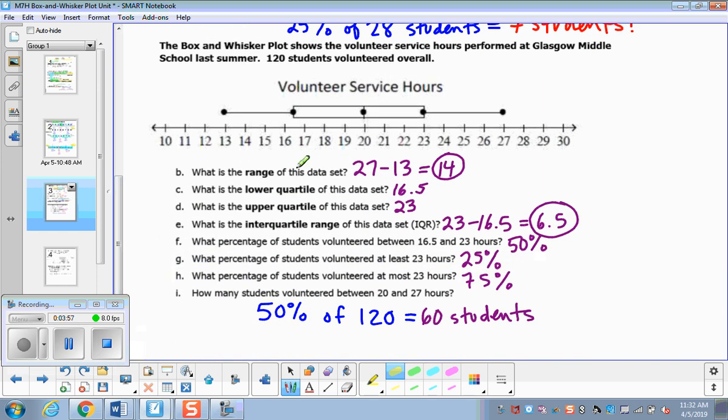Down here, the range of the data. So you have the biggest number, 27, minus the smallest number, 13. So that would be the range of 14. The lower quartile is this 16.5, while the upper quartile is this 23. And so the interquartile range is just subtracting right there. You just want to know the range of the box, so we get a 6.5.